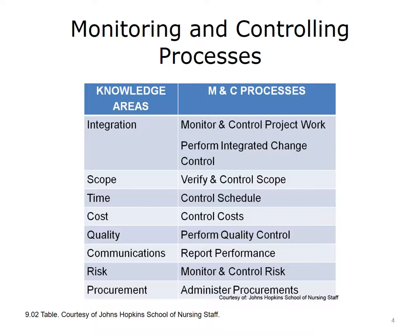This slide relates the monitoring and controlling processes to the different knowledge areas associated with the project management body of knowledge. During the execution of the project, you will direct monitoring and controlling activities in all of these knowledge areas — schedule, communication, risk, and so on. You and your team will monitor project progress and performance to confirm that the project will complete on time, within budget and specifications, and to quality standards. You will ensure that communications are clearly conveyed between stakeholders and implementation personnel, that risk is being managed, and that procurements are being handled. The monitoring and controlling activities touch every aspect of a project.